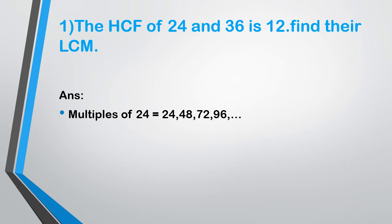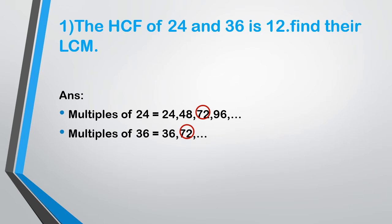Then 24 into 3 is 72, and 24 into 4 is 96. The next step is to find out the multiples of 36 the same way: 36 into 1 is 36, 36 into 2 is 72. Now we choose the common multiples — that is 72. So the LCM of 24 and 36 is equal to 72. We find only one common multiple here, so that is the least common multiple.